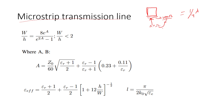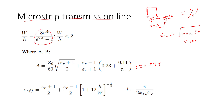The quarter-wave transmission line functions as an impedance transformer. Here, Z₀ = √(Z₁ · Z₂), transforming from 200 ohms to 50 ohms, giving Z₀ = √(200 × 50) = 100 ohms. For our case Z₀ is 100 ohms. Calculating the A parameter using Z₀ = 100, we get A = 2.899.